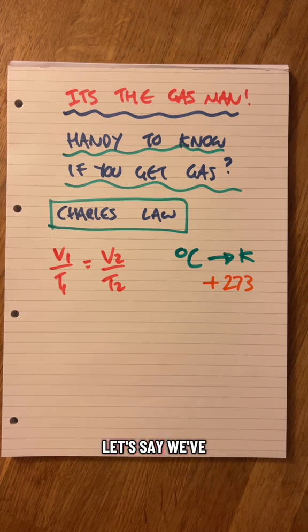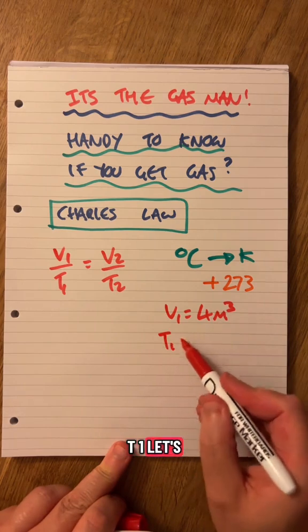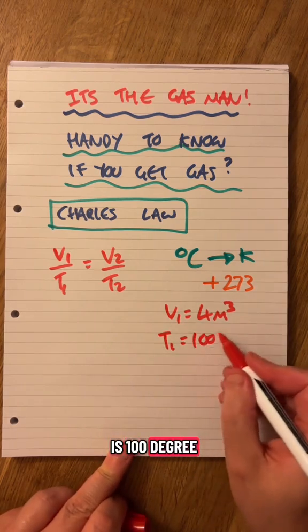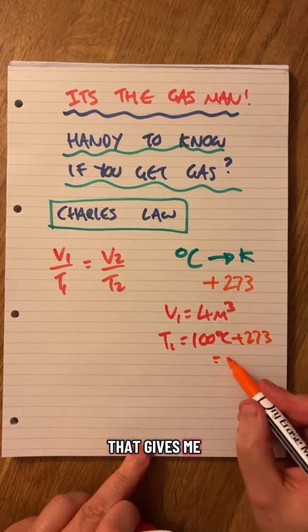So here's my example. Let's say we've got a volume V1 of 4 cubic meters. T1, let's say, is 100 degrees C. We've got to add 273 to that to make it into Kelvin. That gives us 373.